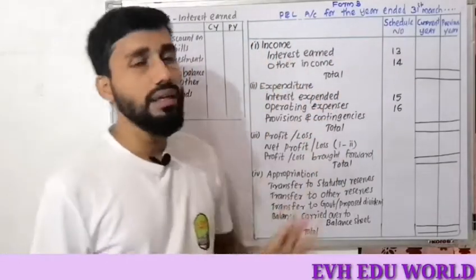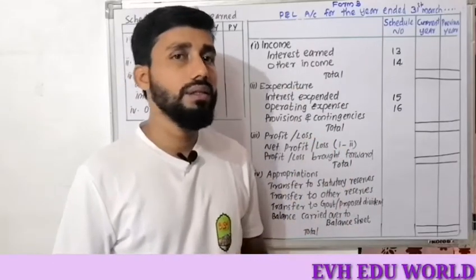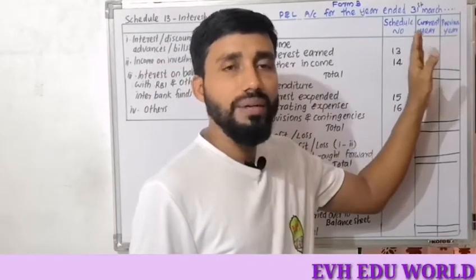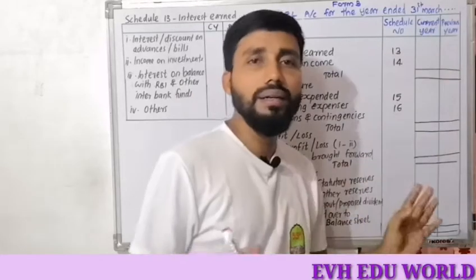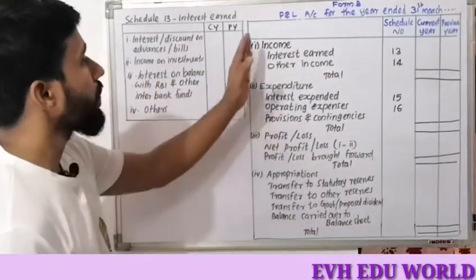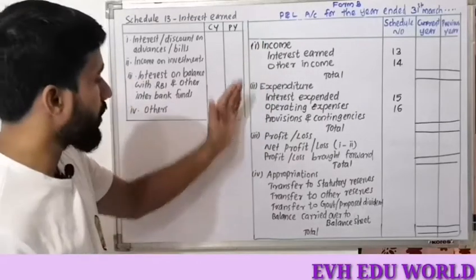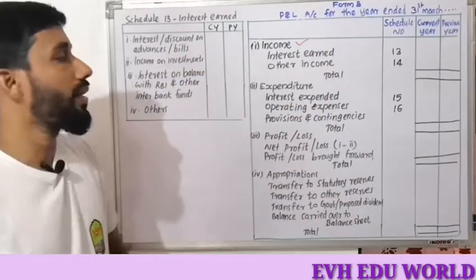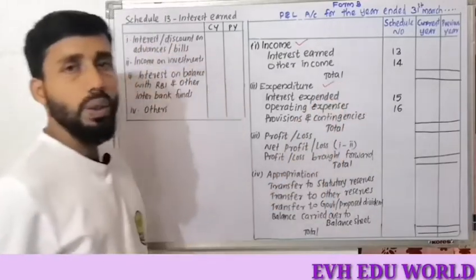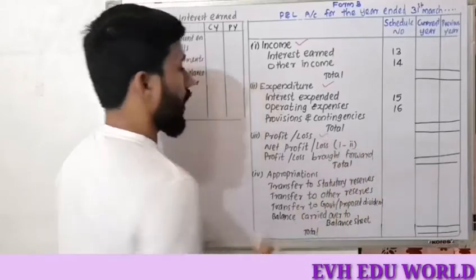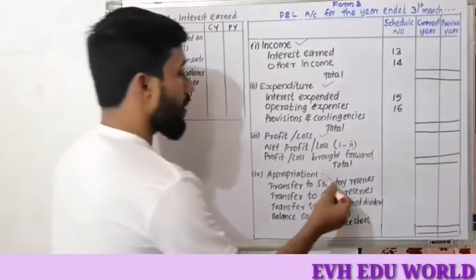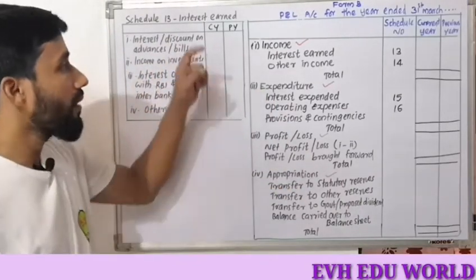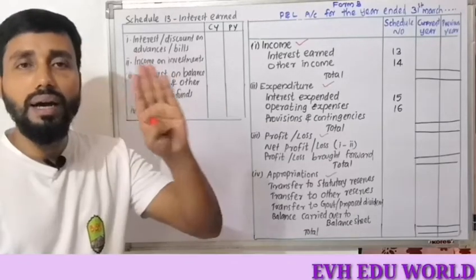The format includes columns for the schedule number, the current year amount, and the previous year amount for comparison. In particular, there are four heads in the Profit and Loss Account: the first is Income, the second is Expenditure, the third is Profit or Loss, and the fourth is Appropriations.